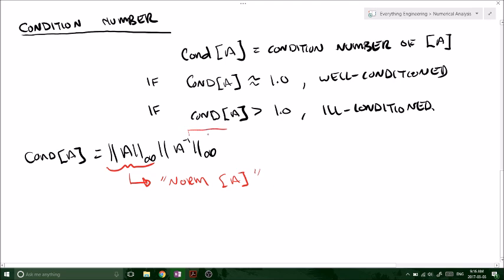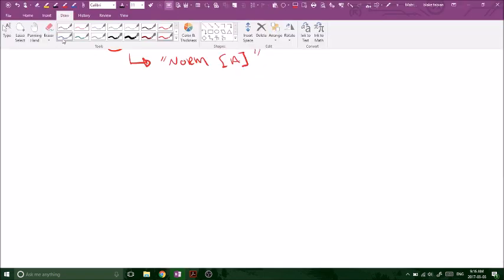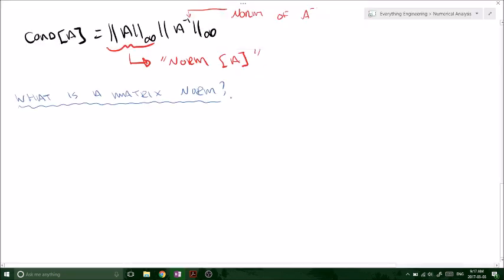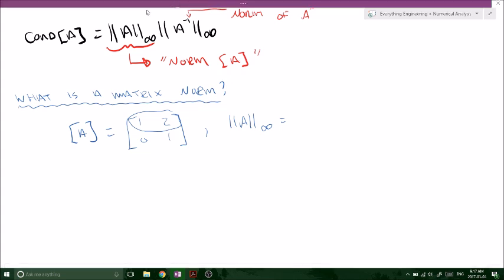So this notation means the norm of A. And this notation is the same, but it just means the norm of A inverse. So what is a matrix norm? A matrix norm is basically just the sum of rows, the sum of the row that you're looking at. For example, say we have a matrix A: 1, 2, 0, 1.